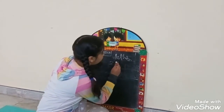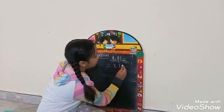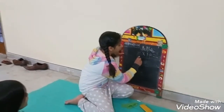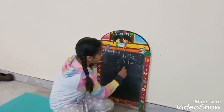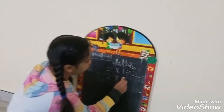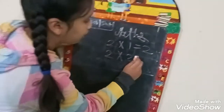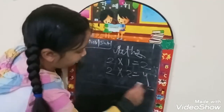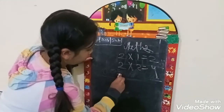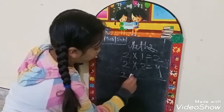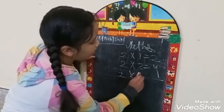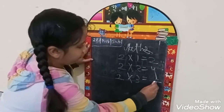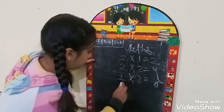Two, one and two. Two, one and two. Two two's are four. Two two's are four. Two three's are six. Two three's are six.